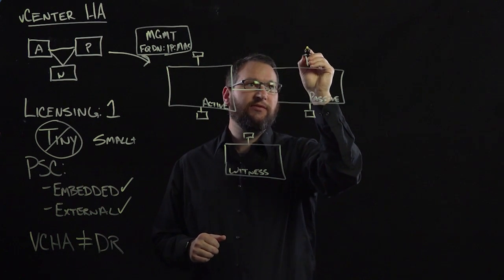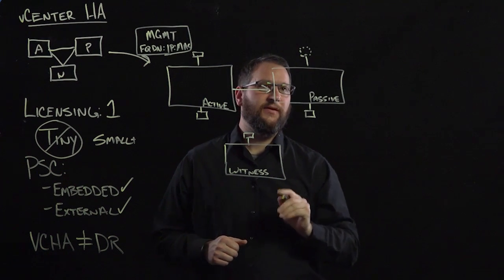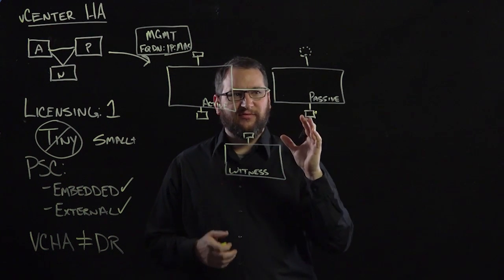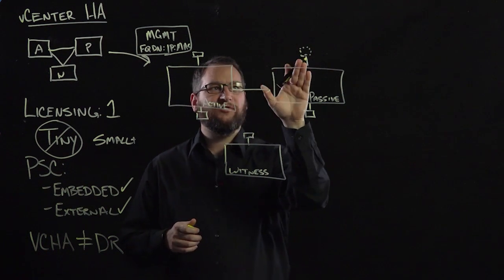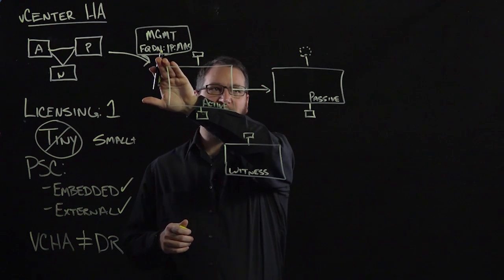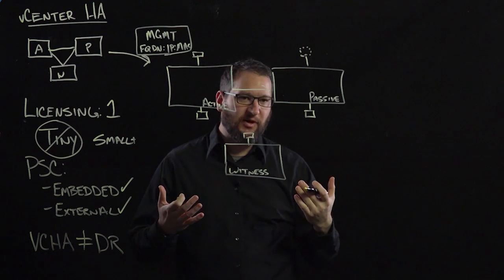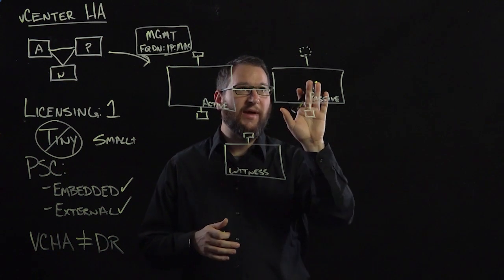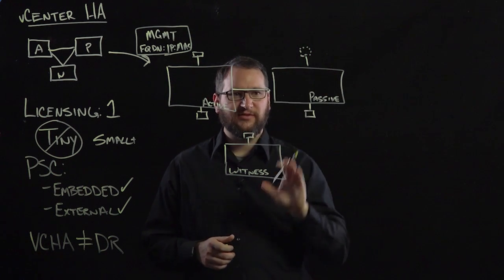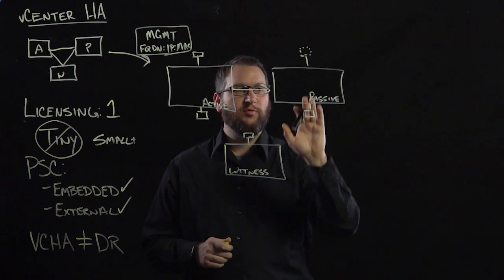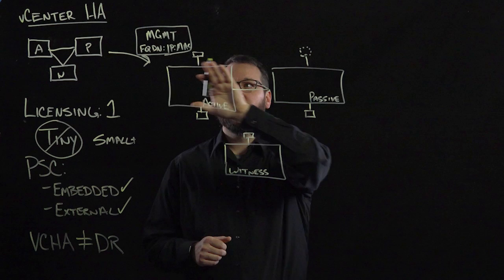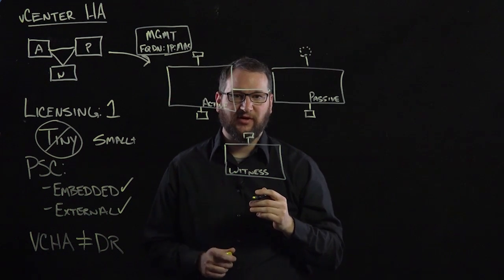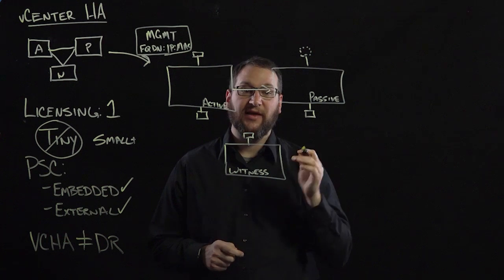And we also have this interface over on our passive node. I'm drawing it in a dashed line because it is administratively offline. If this interface shares both the IP and MAC address, then we'll have some network conflicts if both of these interfaces are online at the same time. So on the passive node, this Ethernet zero or the management interface is always offline. Only when the passive node becomes the active node does it become online and take over the IP and MAC address.